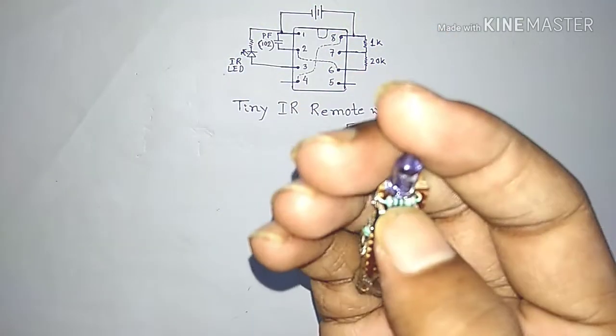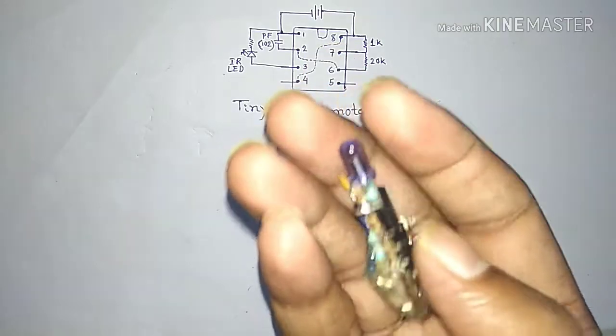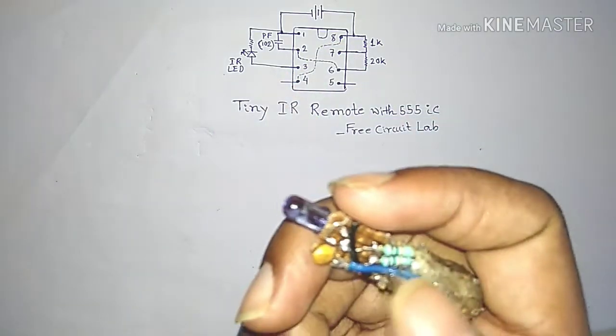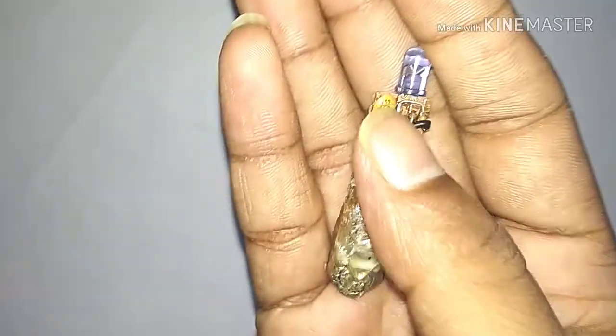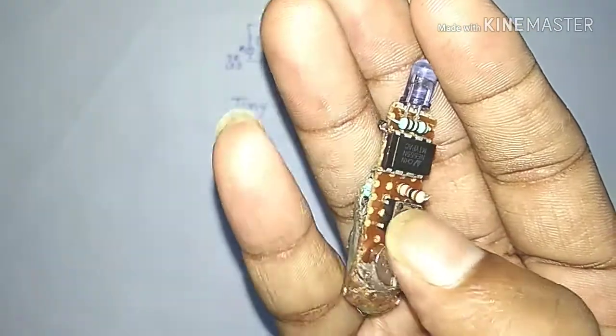This is made of 555 IC. Here is an IR LED, 100 ohm resistor, 1K resistor. This is 20K resistor, two 20K resistors in series. And here is a capacitor also. The code is 102. And here is a micro switch.